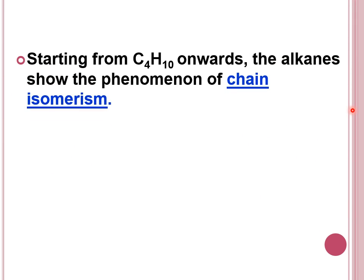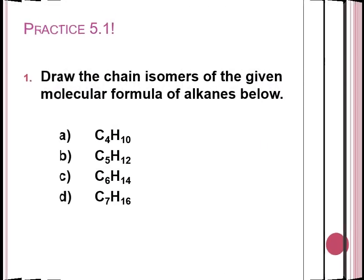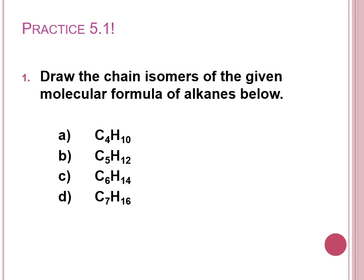Starting from C4H10 onwards, alkanes show chain isomerism — existing as linear or branched structures. This is your homework: do Practice 5.1 by drawing the chain isomers of the given molecular formulas C4H10, C5H12, C6H14, and C7H16.